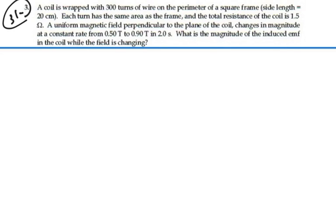Each turn has the same area as the frame and the total resistance of the coil is 1.5 ohms. A uniform magnetic field perpendicular to the plane of the coil changes in magnitude at a constant rate from 0.5 tesla to 0.9 tesla in 2 seconds. What is the magnitude of the induced EMF in the coil while the field is changing?